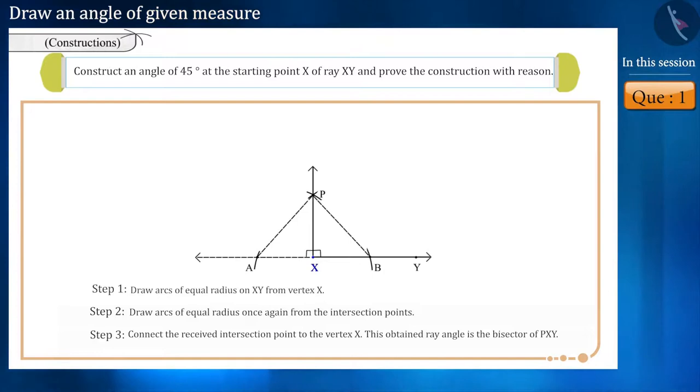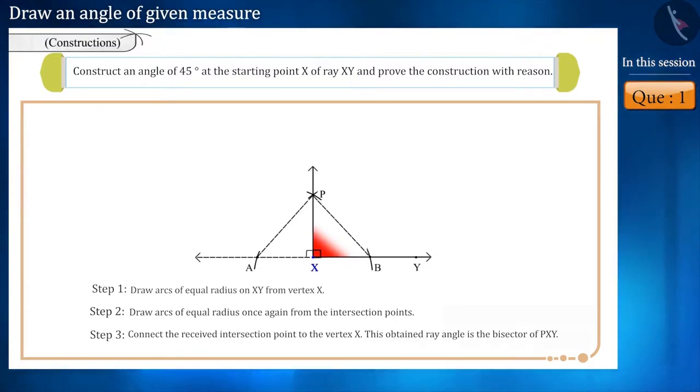At vertex X, on ray XY and ray XP, draw arcs of equal radius. Then, by adding arcs of equal radius once again from the intersection points, joining the intersection point obtained to vertex X as the bisector of angle PXY, we can easily construct an angle of 45 degrees from the vertex X.